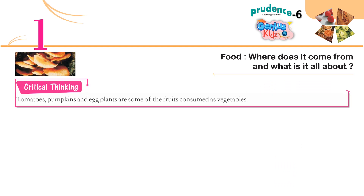Critical Thinking: Tomatoes, pumpkins and eggplants are some of the fruits consumed as vegetables.